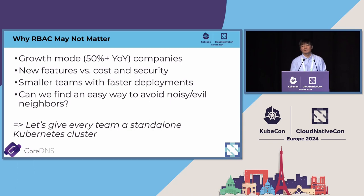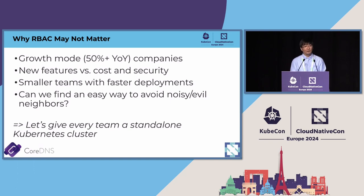Hypothetically, say you work for a small startup with great products to push. Because it's a small startup with high growth — say 50% year-over-year or more — management pushes for new features every day. They care more about growth and less about cost or security. The company operates with smaller teams, each constantly pushing features. That's a so-called fast deployment environment. Can we find an easy way to avoid the noisy neighbor situation?